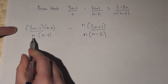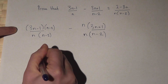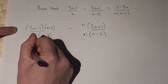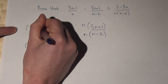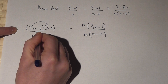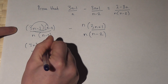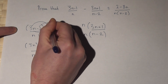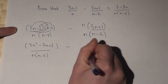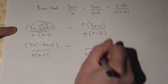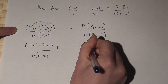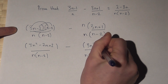They both now have n bracket n minus 2 in the denominator. I then expand the numerator. So 3n times n is 3n squared. Minus n minus 6n is minus 7n. And minus 1 times minus 2 is plus 2. Minus 2, take away this one here. n times 3n is 3n squared. And n times 1 is n.